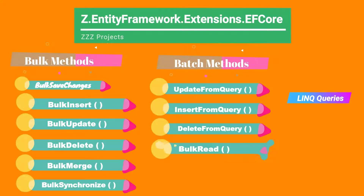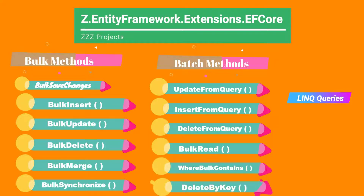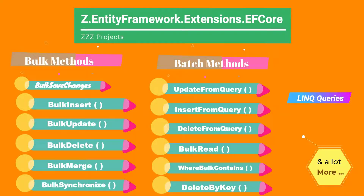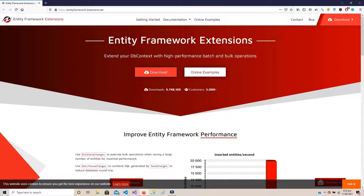Finally, we have a few utility methods such as BulkRead, WhereBulkContains, and DeleteByKey. I have mentioned a few of them and you can get the complete list from its official page — link is given in the description. Now let's design that comparison project from scratch in ASP.NET Core and see how to use the BulkSaveChanges method in our .NET application. Let's open Visual Studio.